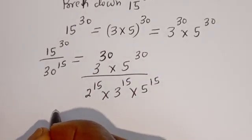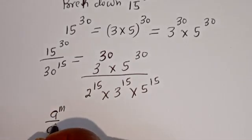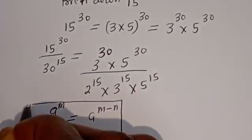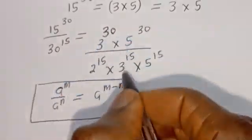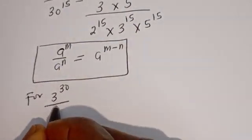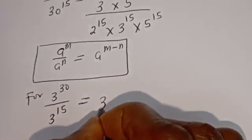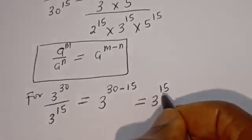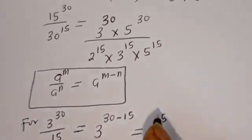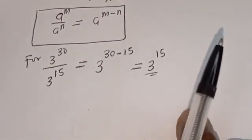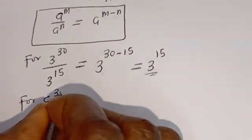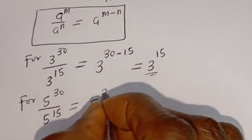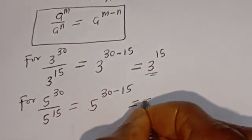Take note that if you have A^m divided by A^n, this equals A^(m−n). So for 3^30 divided by 3^15, this equals 3^(30−15), which is 3^15. Also, for 5^30 divided by 5^15, this equals 5^(30−15), which is 5^15.